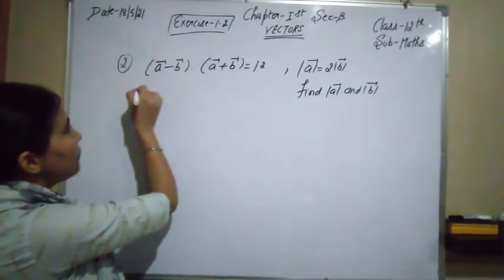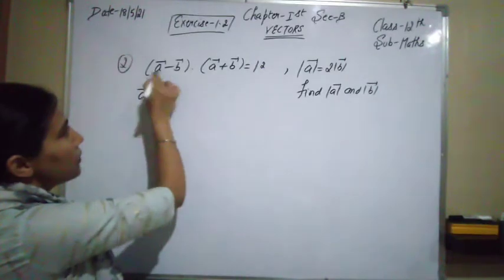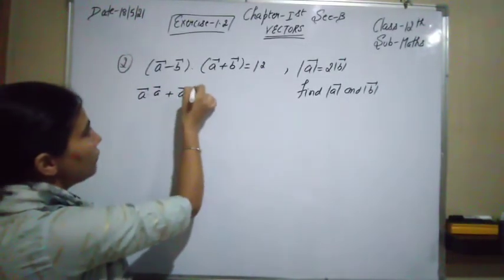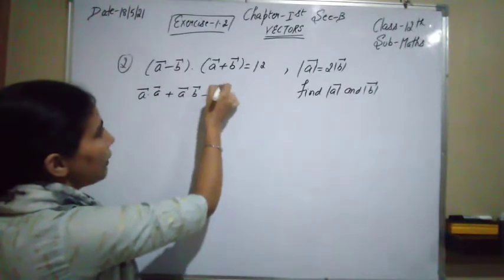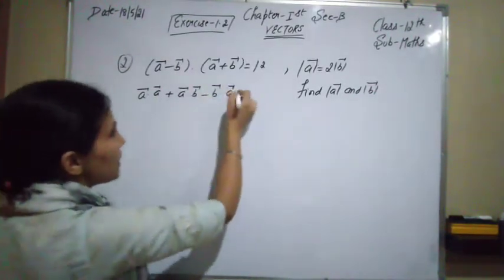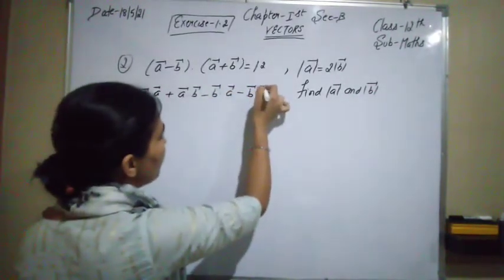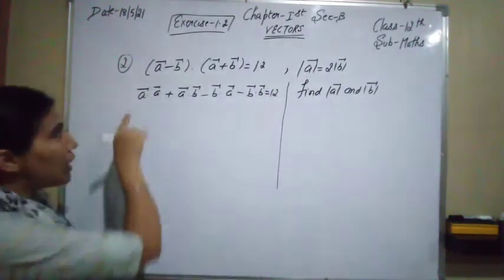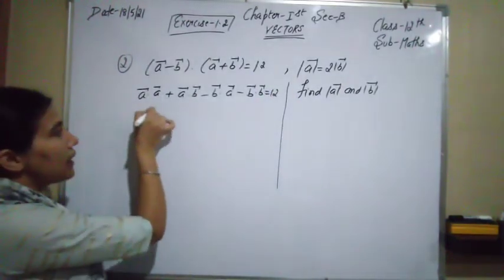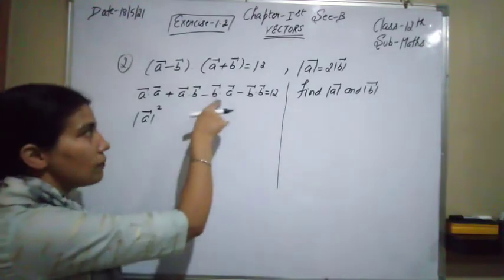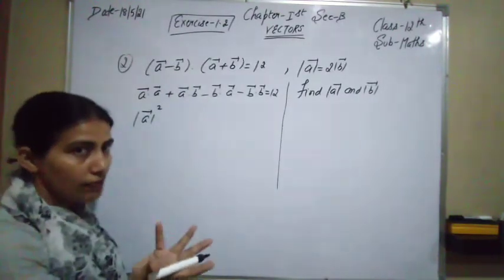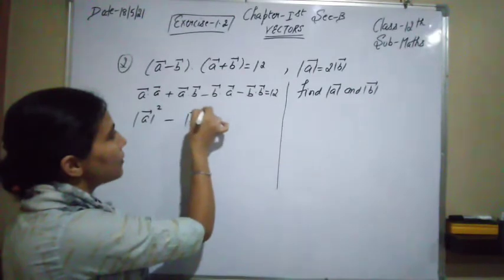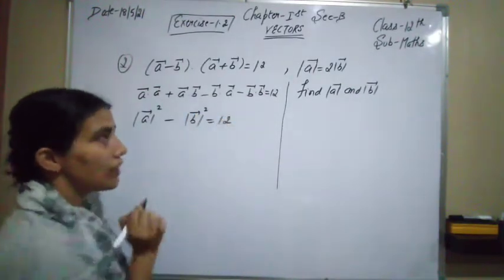This simplifies to |a⃗|² − |b⃗|² = 12, since a⃗·b⃗ and b⃗·a⃗ cancel each other. Now we substitute |a⃗| = 2|b⃗|, so (2|b⃗|)² − |b⃗|² = 12, which gives 4|b⃗|² − |b⃗|² = 12.